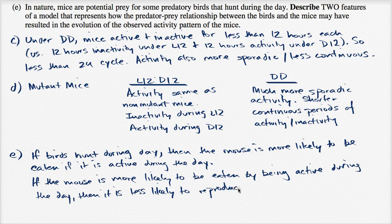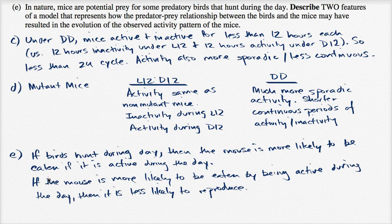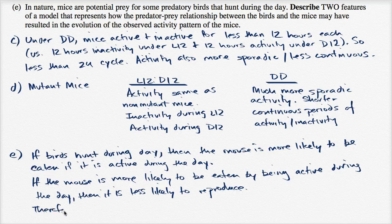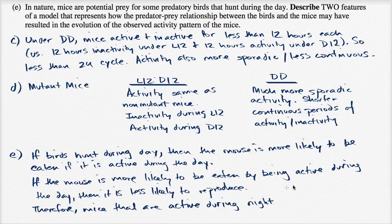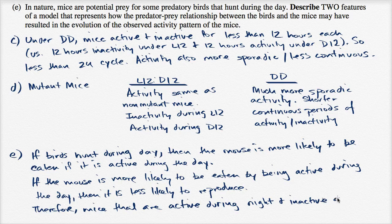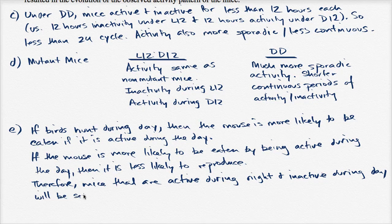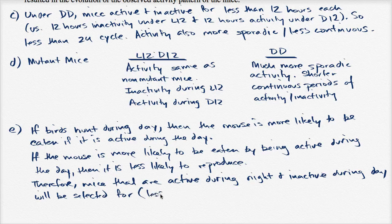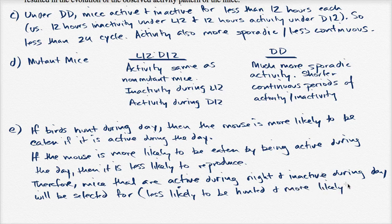And if I were, if I were taking the AP test here, I would try to put as much context as possible because you're not exactly sure how they're going to mark this thing, to grade this thing. So you could give more context, that, therefore, the mice that, that are active during, therefore, therefore, mice that are active during night, they have to be active sometime, active during night and inactive during day will be selected for. Will be selected for. Less likely to be eaten, less likely to be hunted, I guess you could say, and more likely to reproduce. More likely to reproduce.